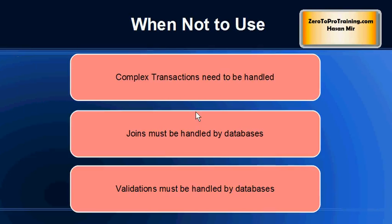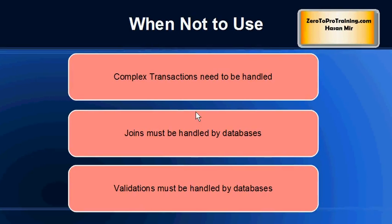If you have transaction processing in the scenario — for example, where you want to commit either all the transactions or none of the transactions — then you might want to use relational databases. A bank transfer is an example: you're transferring money from one account to another and you don't want money reduced from one account without reaching the other. If joins need to be handled by the database, or if validations and constraints are expected to be handled by the database and your application cannot handle them, then you must rely on relational databases.